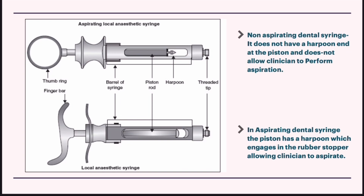In this diagram, the top syringe is the aspirating local anesthetic syringe and the bottom diagram is the non-aspirating syringe. The main difference between these two is that in the aspirating syringe, we have a piston rod with a harpoon attached to it. The function of this harpoon is that it engages into the rubber stopper of the cartridge, which helps the clinician to aspirate.